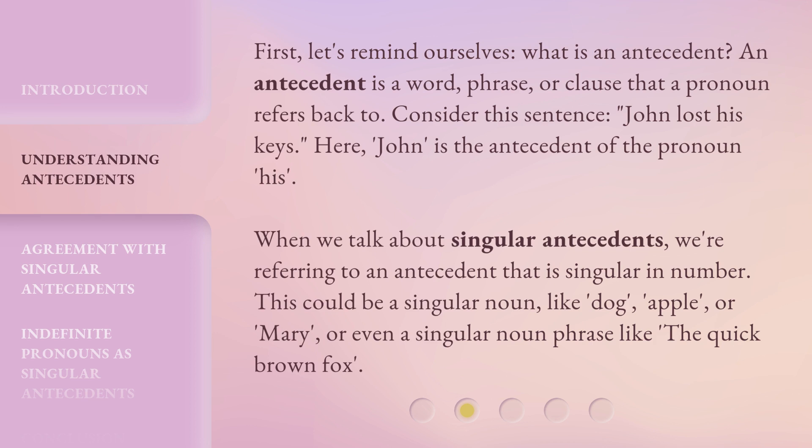When we talk about singular antecedents, we're referring to an antecedent that is singular in number. This could be a singular noun, like 'dog,' 'apple,' or 'Mary,' or even a singular noun phrase like 'the quick brown fox.'